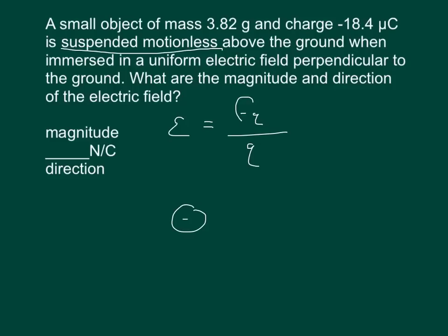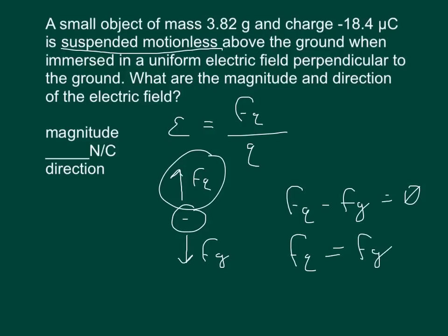If we draw our negative charge, we know that we have this electric force and we have the gravitational force. If we define our vectors as upward being positive, then we would say FQ minus FG equals zero, or we can rewrite it so the force of the charge is equal to the force of gravity.